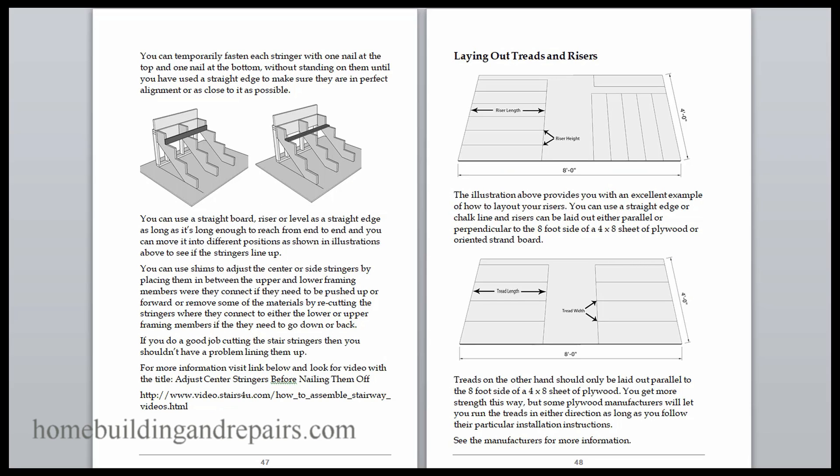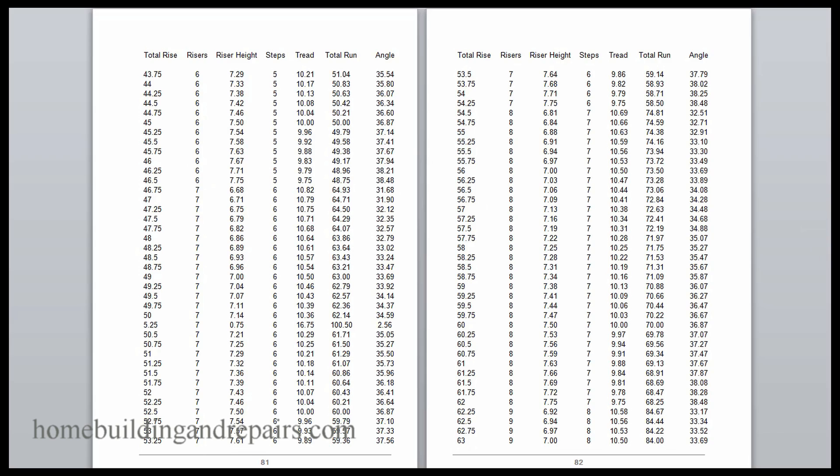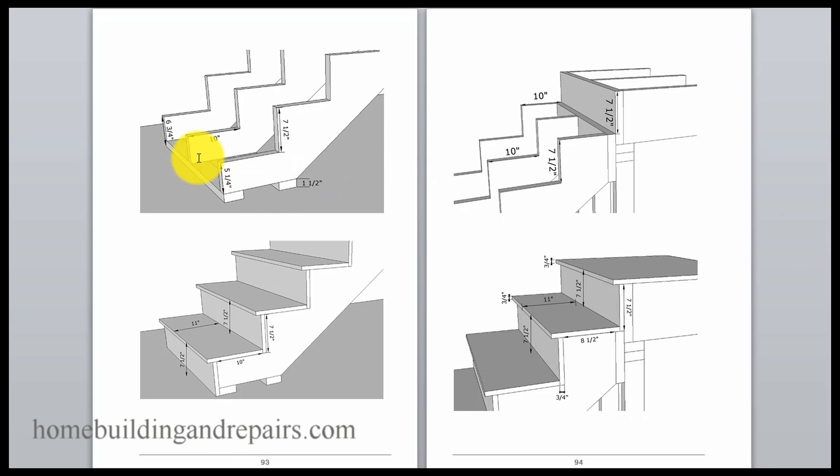Here's some stuff you will find in book number one. Just kind of whip through it. You will have a table of measurements. If you're having a problem figuring out your risers, you can simply use these tables. Great idea. Gives you some ideas for straight set of stairs.